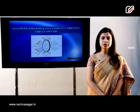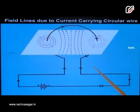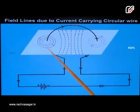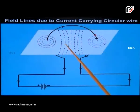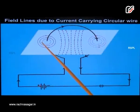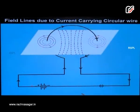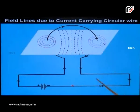Let us see the pattern of the field lines due to a current-carrying circular wire. When current is passed in the circular wire, we see that magnetic field lines are induced and arrange themselves in concentric circles. When you look towards the core of the circular loop, the magnetic field lines become smaller and smaller, and as we move away from the core, the field lines become larger in concentric circles. At the center of the loop, the magnetic field lines appear as straight lines.